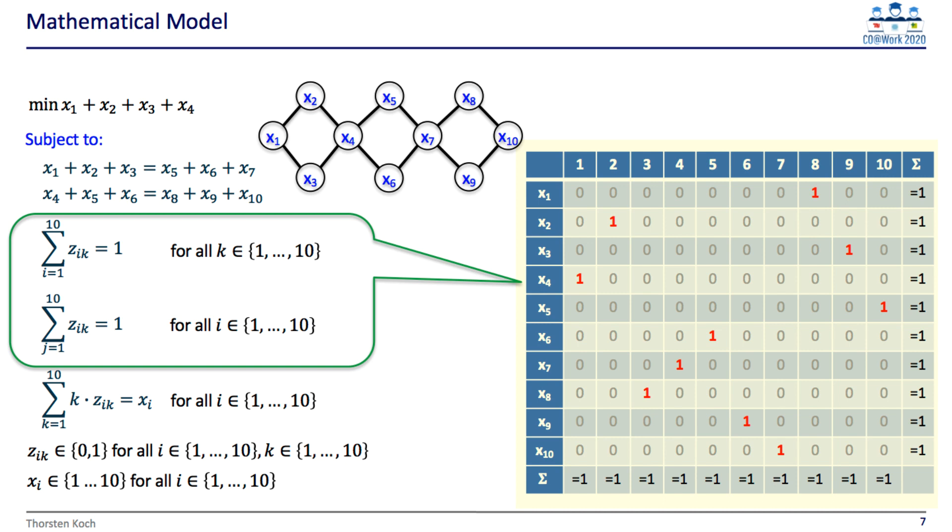So we get this table, and each row and column sums up to 1. We now connect the x and the z variables by these equations where each z is multiplied by its digit.